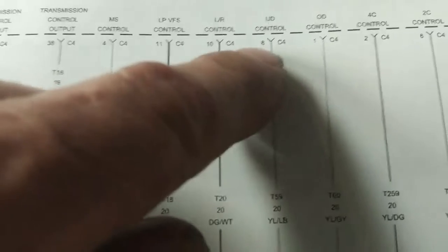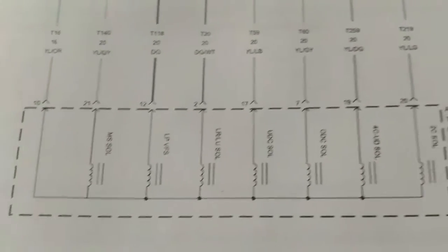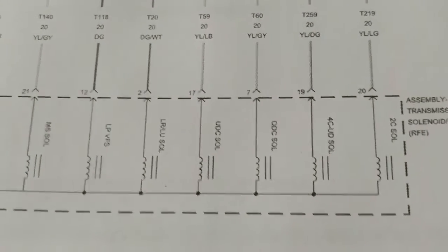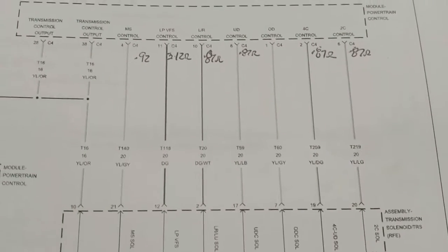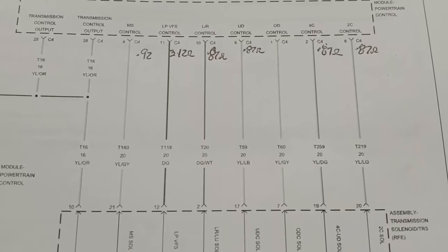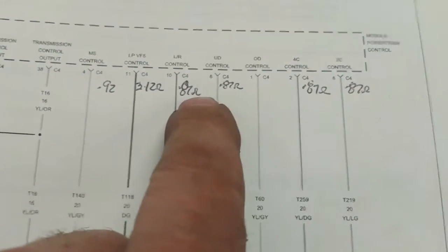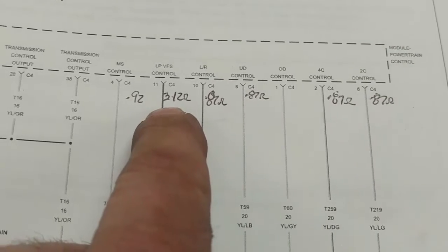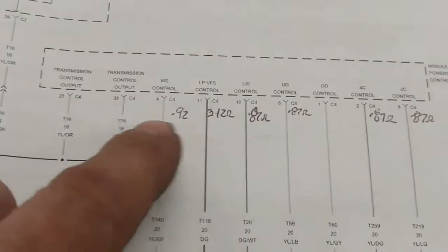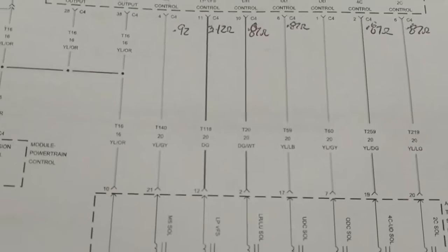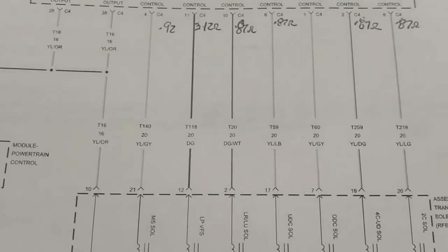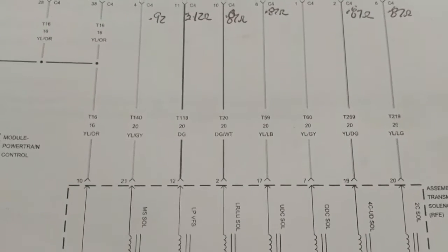I'm going back up to the engine control computer on the transmission connector to test all the solenoids based on this electrical circuit — pins 38, 4, 11, 10, 8, 1, 2, and 6 — to see if they all measure relatively the same resistance. Strange thing is I do not have a wire in pin 1 for the overdrive control solenoid, which seems to match the schematic. Readings: 0.87 ohms, 0.87, 0.87, 0.87, then 3.12 ohms on the LPV FS solenoid, and 0.92 on another. There's definitely a problem with the 2C pressure switch circuit inside the valve body.